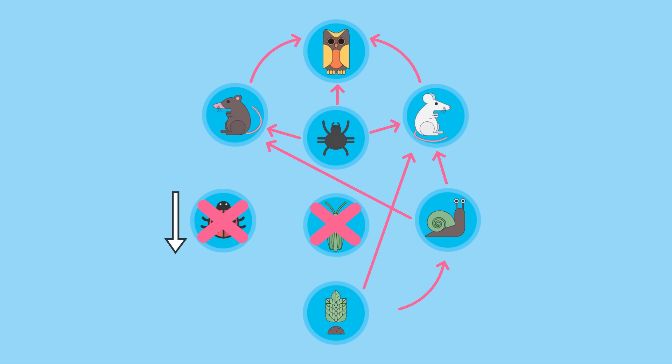However, some population sizes will increase. If there are less individuals eating the green plants, then their population will increase, which provides more food for the snails. So altering one link in the food web has big consequences for the whole system.